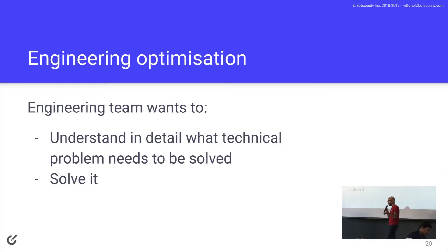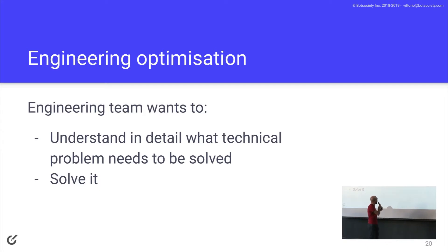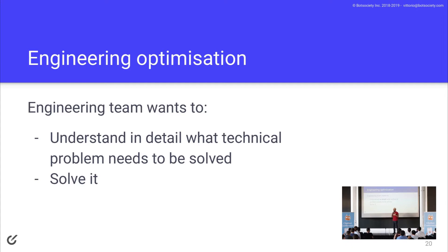Engineering optimization — what I mean by that. When you're trying to solve a problem from an engineering perspective, you want the problem to be crisply and in detail when you approach it. You don't want a loosely defined problem. The key word here is 'in detail.' From a management point of view, if you want to keep your engineering team on track and use the talent that you have, you need to critically define the problem.